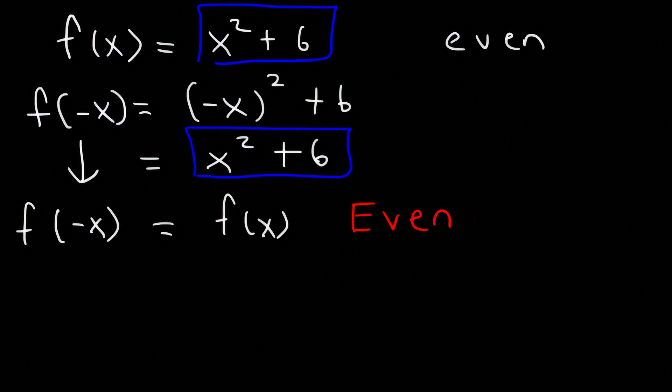So if you see a constant number, think of it as being multiplied times x to the 0 power. And 0 is an even number, like 2, 4, 6.